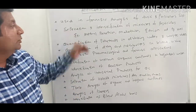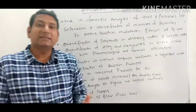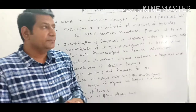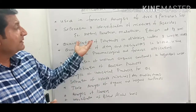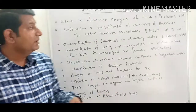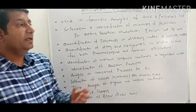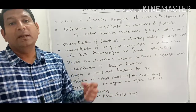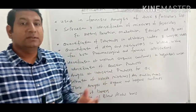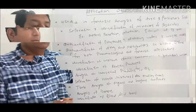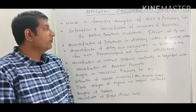The next application is separation and identification of mixtures of pesticides. Pesticides such as parathion, malathion, and ethion are used in farming to remove pests. These pesticides can enter food substances and harm the human body, so we must identify their concentration and levels in food products using a suitably sensitive method.